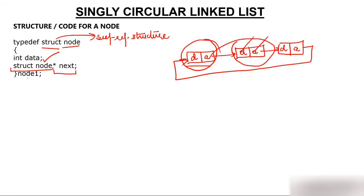We have created a variable of this structure which is node1, and we have typedef'd the structure. Why? Because now instead of writing 'struct node' I can just use 'node1'. Node1 is representing the entire structure.